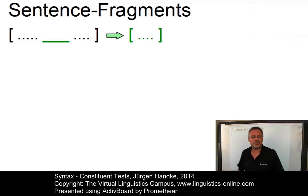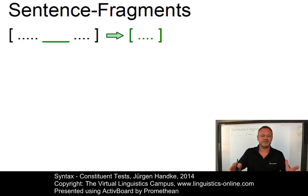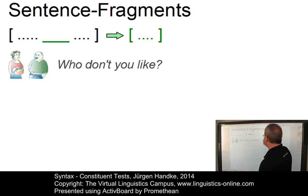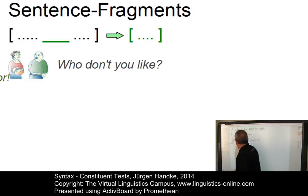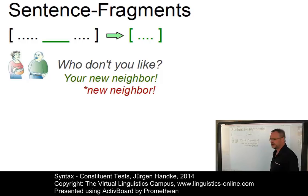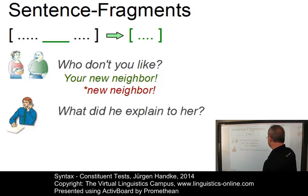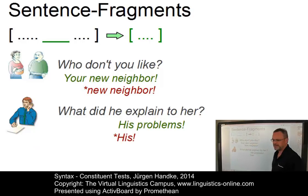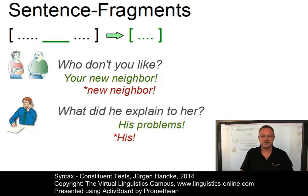Another distributional test has become known as the sentence fragment test. In a large number of contexts, especially in conversations, short-form replies are made. These replies, which are also referred to as sentence fragments, are highly constrained. Not surprisingly, only whole constituents can serve as sentence fragments. Imagine the question: 'Who don't you like?' Well, the answer could easily be 'your new neighbour.' But you wouldn't use 'new neighbour' as an answer — that's ungrammatical. Or take: 'What did he explain to her?' — 'His problems.' That's legitimate. But if you just use 'his' as an answer, well, that's ungrammatical. So again, it's the entire constituent that has to be used as a sentence fragment.